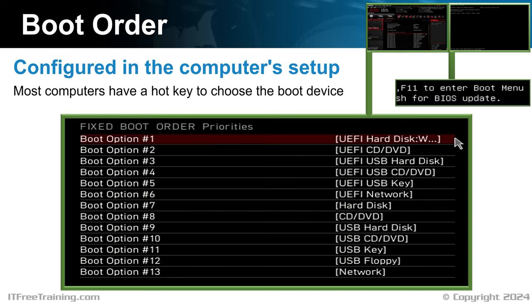When your computer fails to boot, one of the primary checks should be to ensure it is attempting to boot from the correct device. If a storage device malfunctions, the computer's setup may automatically switch to other available storage options, like a second hard disk. It's crucial during troubleshooting to verify you're focusing on the right device — troubleshooting symptoms related to the wrong storage device may lead you astray.